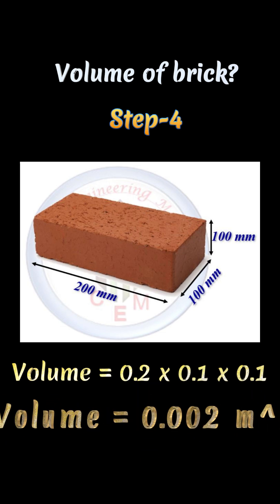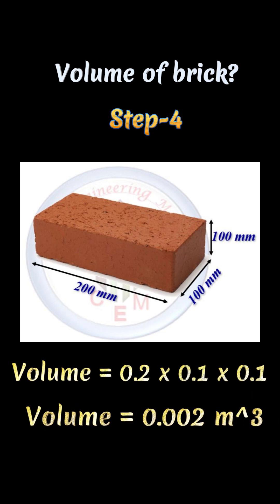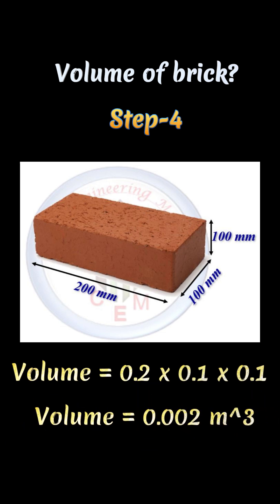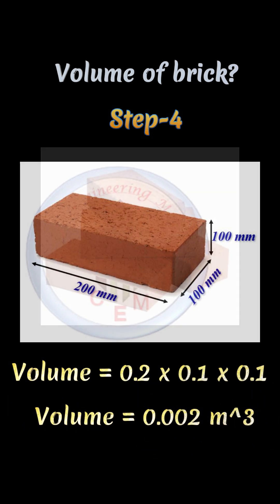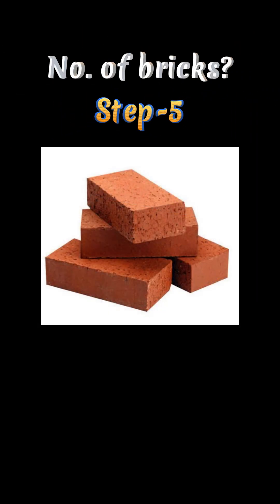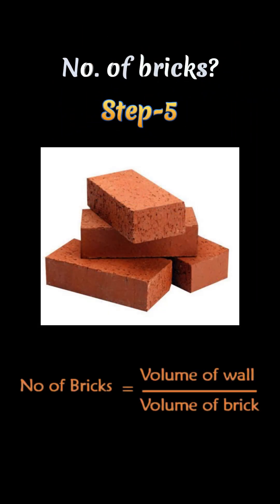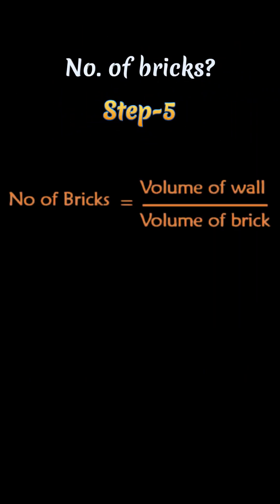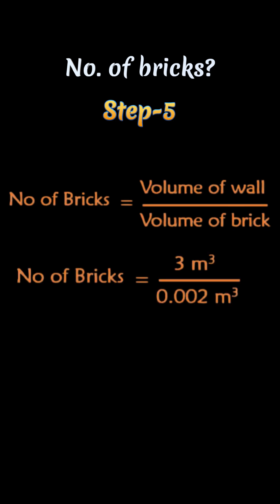Step four: calculate the volume of the brick. Volume is equal to L×B×H. Length is 0.2 m, width is 0.1 m, and height is 0.1 m, so the volume of the brick is 0.002 meter cubed. Step five: calculate the number of bricks. Number of bricks equals volume of wall divided by volume of brick.